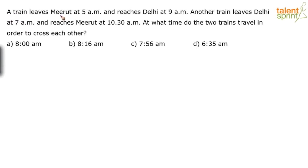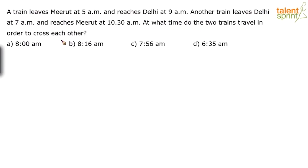A train leaves Mirit at 5 am and reaches Delhi at 9 am. Another train leaves Delhi at 7 am and reaches Mirit at 10:30 am. At what time do the two trains cross each other?